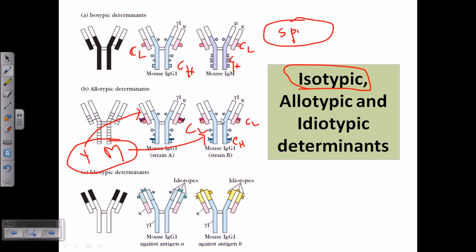These variations are called allotypes — we are both human beings, but your immunoglobulins are different from mine. The third kind is called idiotypic determinants. Idiotypic determinants are designated only by the variable region of both the heavy and light chains. The variable region varies across all the immunoglobulins. For isotypic determinants we talked about similarity across a species; for allotypic determinants we find differences between individuals.